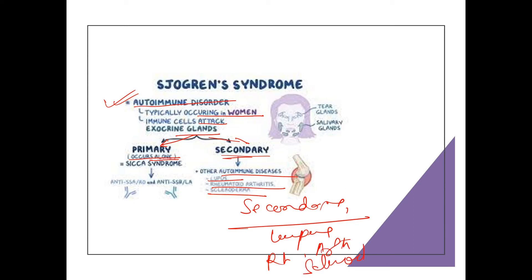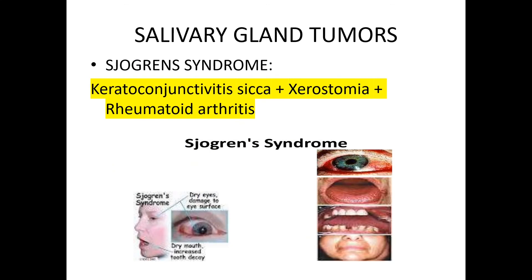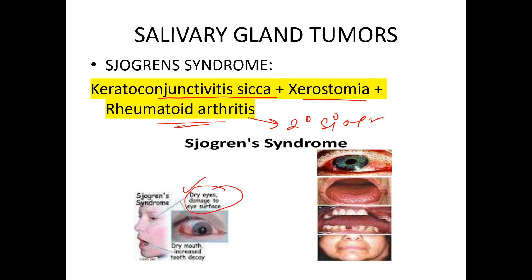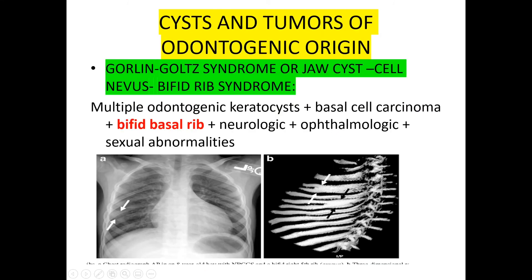Secondary Sjögren's syndrome occurs with lupus, rheumatoid arthritis, and scleroderma, but primary occurs alone. The symptoms of Sjögren's syndrome include keratoconjunctivitis sicca — meaning dry eyes, damage to the eye surface — and xerostomia, meaning dry mouth. Dry mouth leads to increased tooth decay.